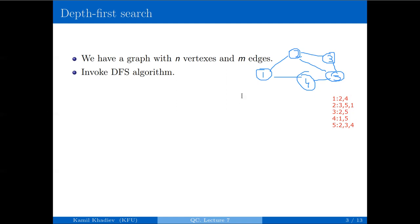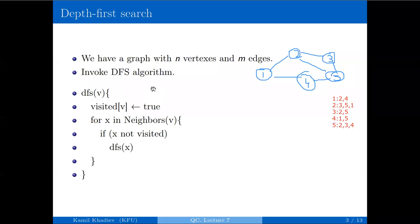Now let's look at the standard form of the DFS algorithm. We have a boolean array that indicates whether a vertex is visited or not. When we want to visit vertex v, we mark it as visited and then consider all neighbors of vertex v. If a neighbor x is not visited, we invoke the DFS algorithm for that vertex.